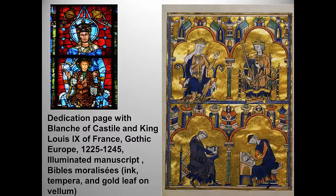Blanche ruled France from her husband's death, when her son was 12, until he gained his majority at 21. By most accounts she was a clever and successful queen who dealt with a rebellion by nobles and an outbreak of heresy. Her son Louis IX followed in her footsteps — negotiating diplomatic settlements, reorganizing public administration, strengthening laws that upheld royal power, and enforcing Catholic teaching. He fought in two crusades and was sainted in 1297, the only king of France to achieve this distinction. This reflects the rise of more powerful kingdoms seen in Gothic art.